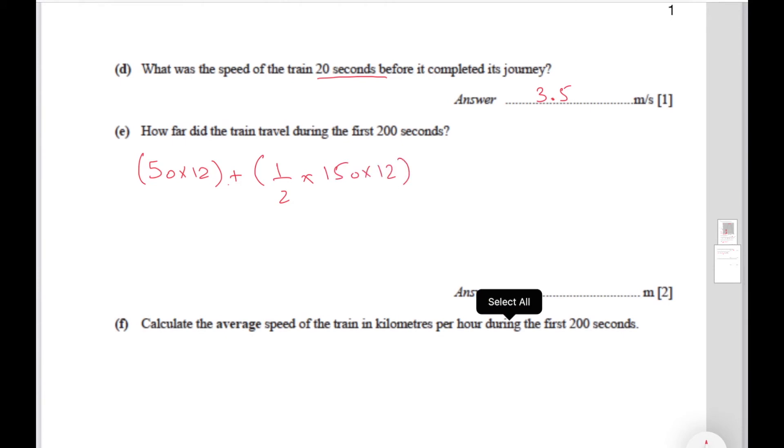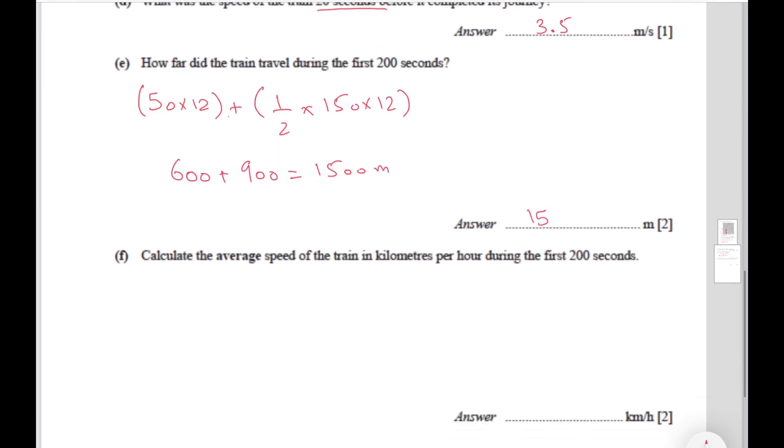So 50 times 12, let's see what we get. 50 times 12 gives us 600. And sorry, not an equal sign but a plus sign over here. And half times 150 times 12, this gives us 900. When we add the two, the distance comes out to be 1500 meters. So we write our answer over here, 1500.